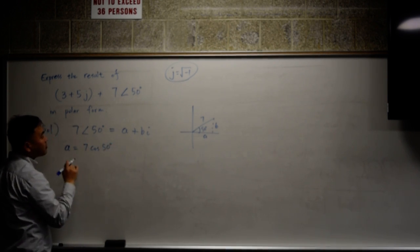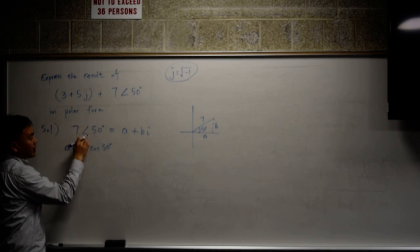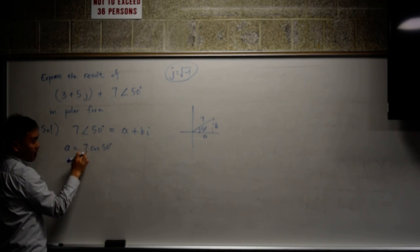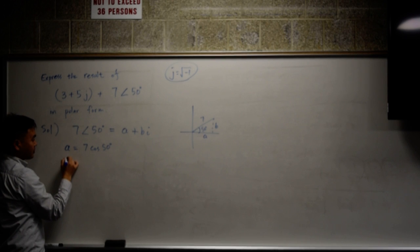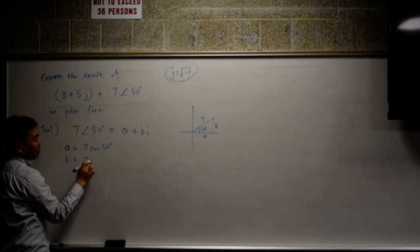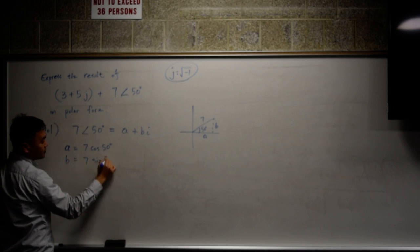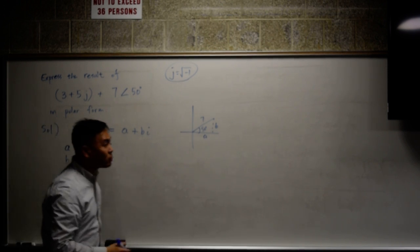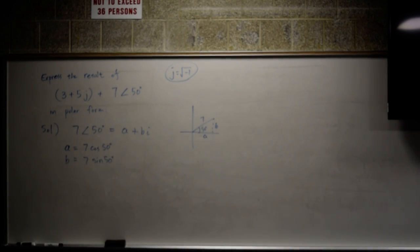Whenever you have r angle theta, a will be r cosine theta and b will be r sine theta. That's the formula to convert things into rectangular form.